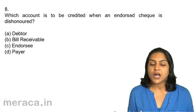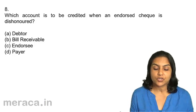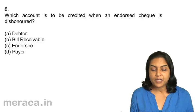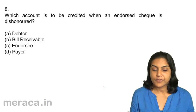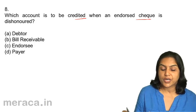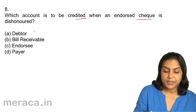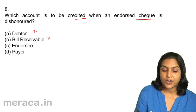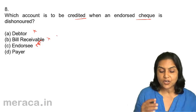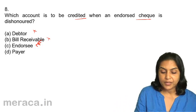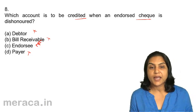Question 8: Which account is to be credited when an endorsed cheque is dishonoured? A. Debtor, B. Bill receivable, C. Endorsee, D. Payer. The debtor's account has to be debited. Bill receivable will not come into the picture because it was endorsed and given to the endorsee. Therefore, the endorsee's account should be credited. If the endorsee suffers, the endorsee's account has to be brought back. The payer's account is the debtor's account — this would be debited. Correct answer: 8C.